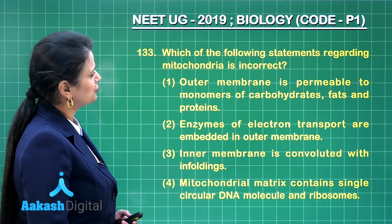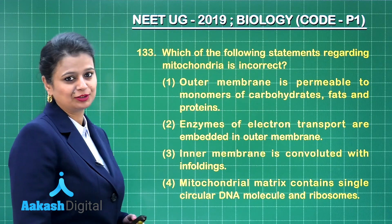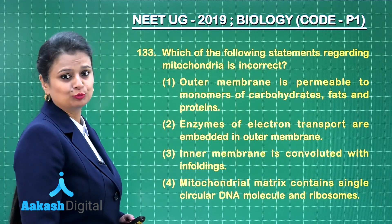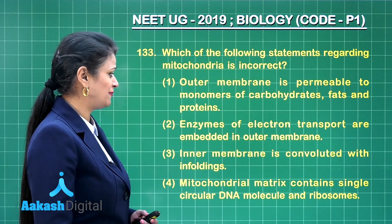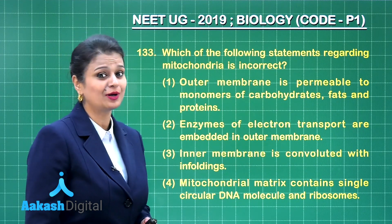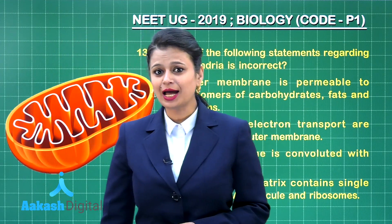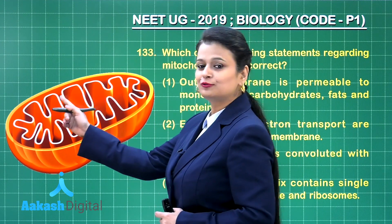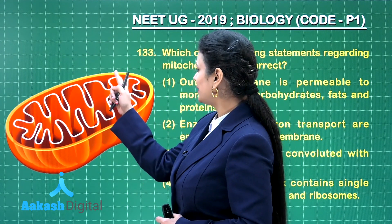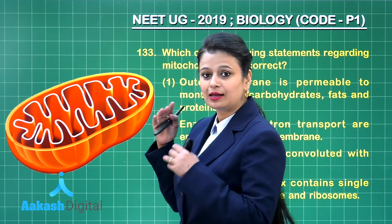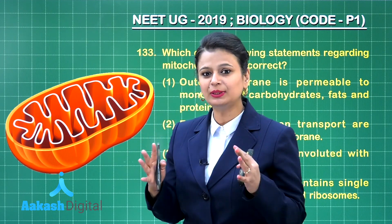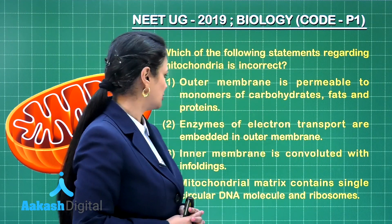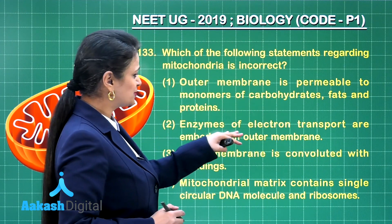Question number 133: which of the following statements regarding mitochondria is incorrect? The outer membrane is permeable to monomers of carbohydrate, fats, and proteins — that is correct. In mitochondria, the envelope is formed of two membranes: the outer membrane and the inner membrane. The outer membrane is more permeable due to the presence of porins, so that option is correct.